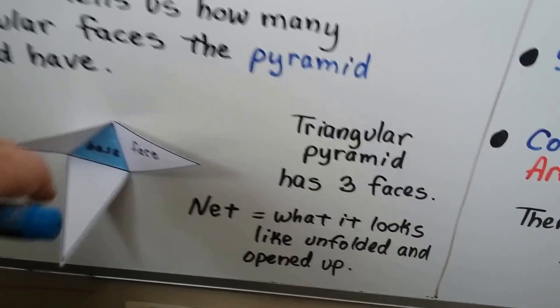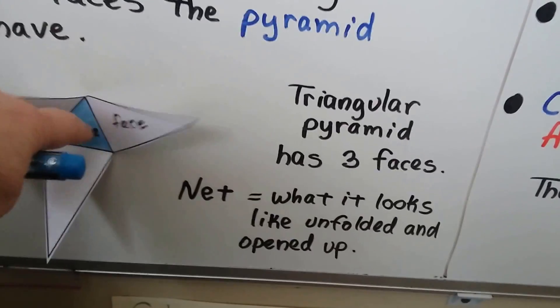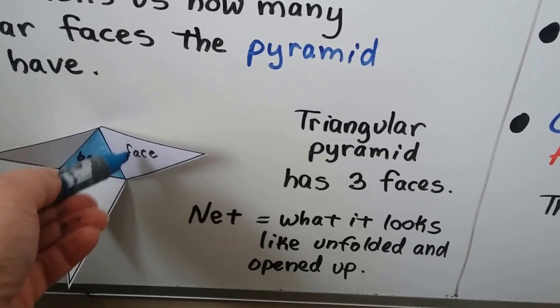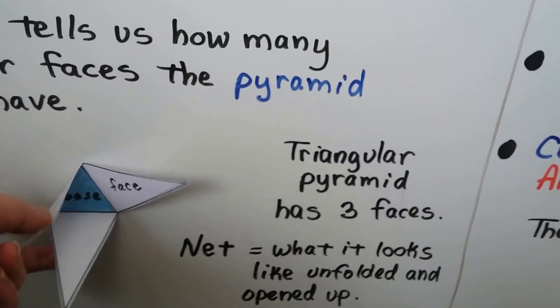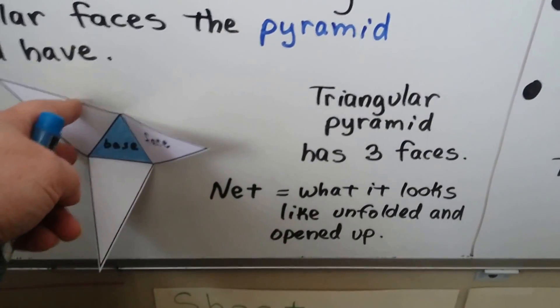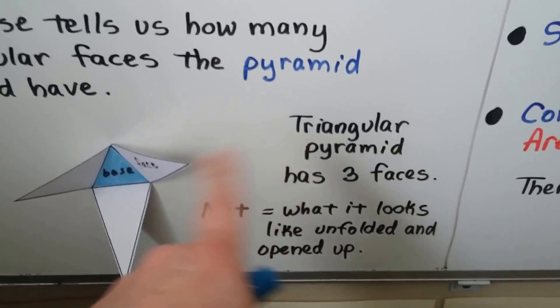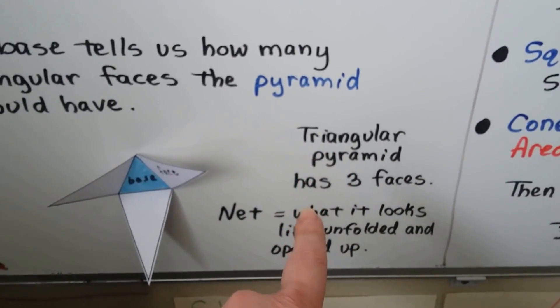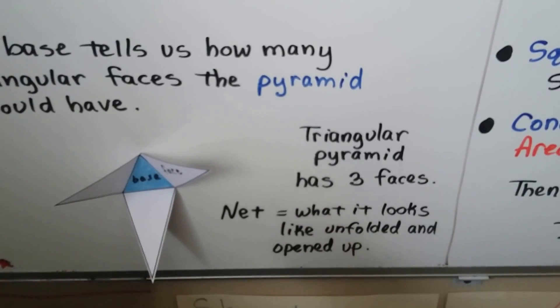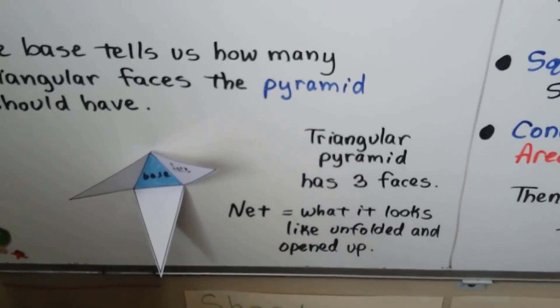This is called a net. It's when you unfold the 3D shape. We can see the base is here, and each of these are faces. And if we folded them together, we'd make a pyramid. You can actually find these if you search online and type in net of triangular pyramid or net of a cone. You'd be able to go to images and print those and cut them out and play with them.